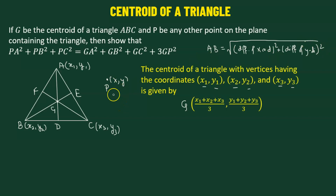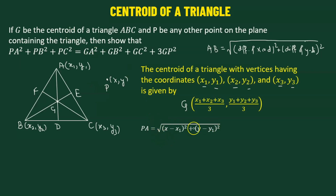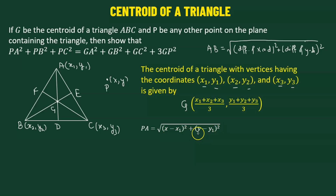Let's begin by finding the distance PA. To define PA, we take the square root of (x − x1)² added to (y − y1)².